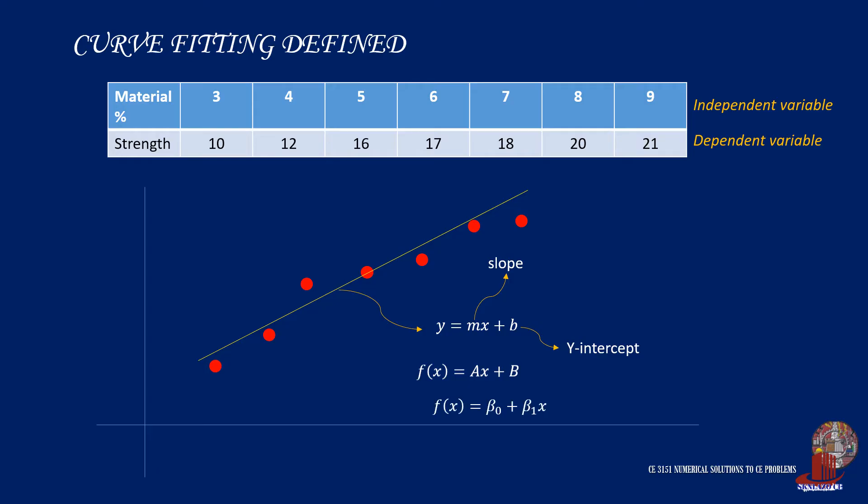Also in statistics, the same formula is converted into f of x equals beta naught plus beta sub 1 times x, as the subject is fond of using Greek characters.